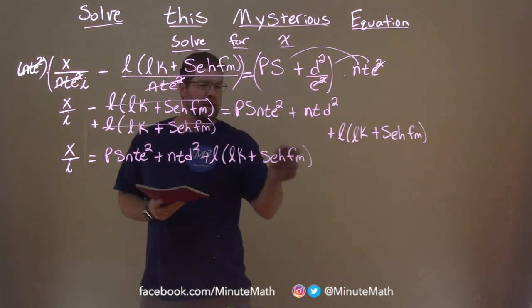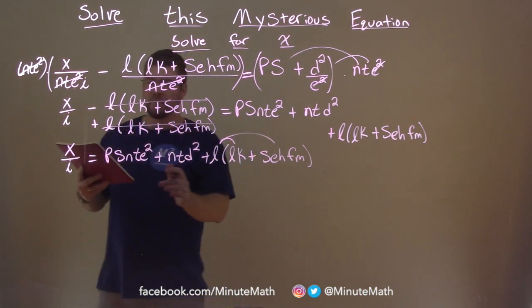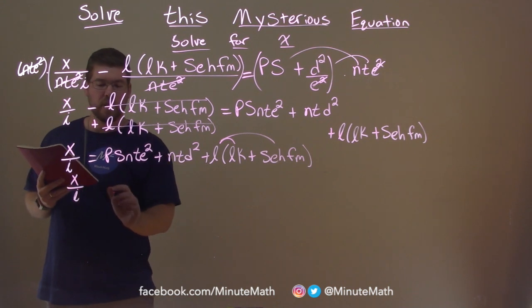Now I want to distribute this l across. Let's just get that over with so it's not just there. So again, rewrite the left-hand side, x over i.